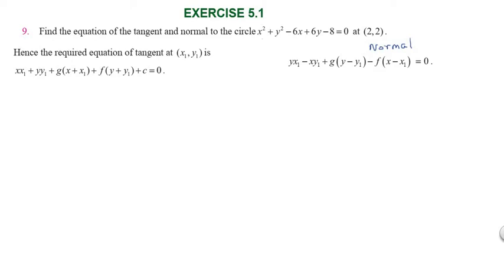Find the equation of the tangent and normal to the circle x² + y² - 6x + 6y - 8 = 0 at (2,2).